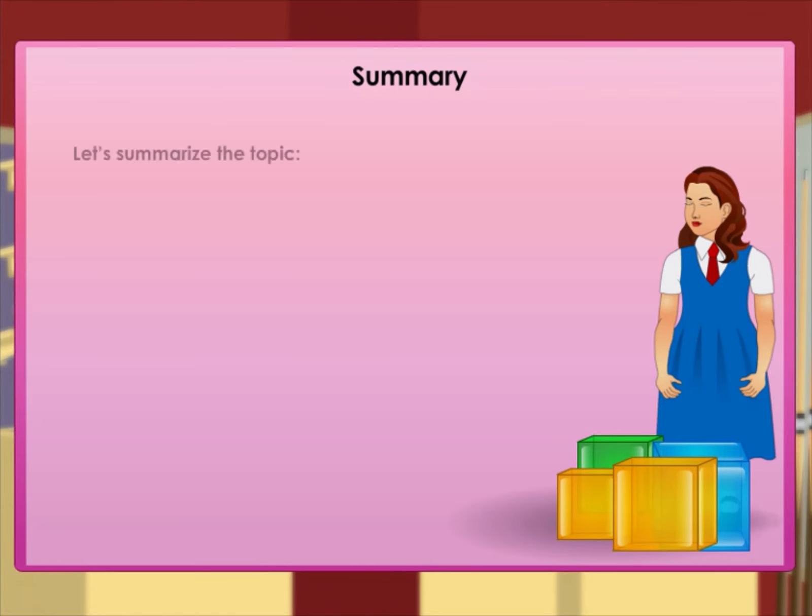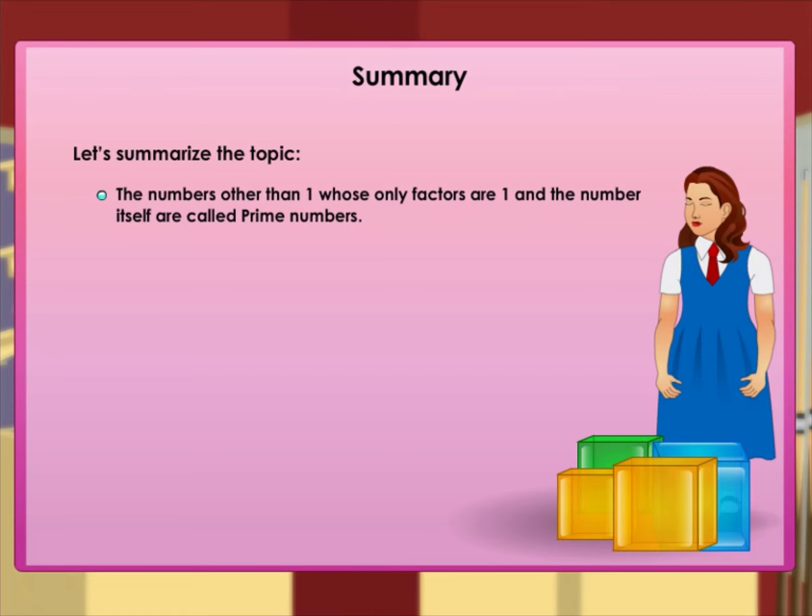Summary. Let us summarize the topic. The numbers other than one whose only factors are one and the number itself are called prime numbers.